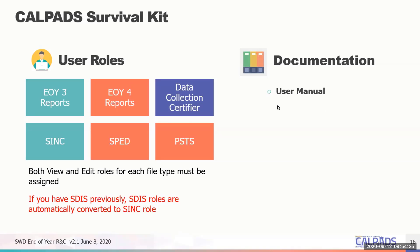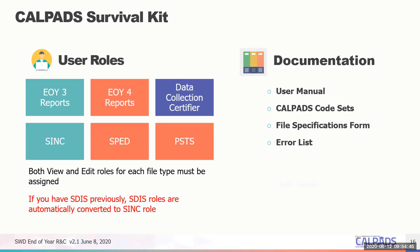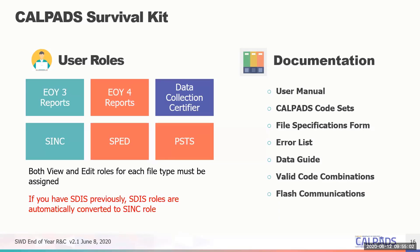Documents you need to be familiar with include the CALPADS user manual — just Google 'CALPADS user manual' and it comes right up. The CALPADS code set, the CFS file specifications, the error list, and the data guide can all be found at the CDE system documentation page — search 'CALPADS system documentation' to find it. Once you have that page, bookmark it because all official documentation is there, including valid code combinations and a link to Flash Communications. This training was created to condense the most important information for those new to the process.